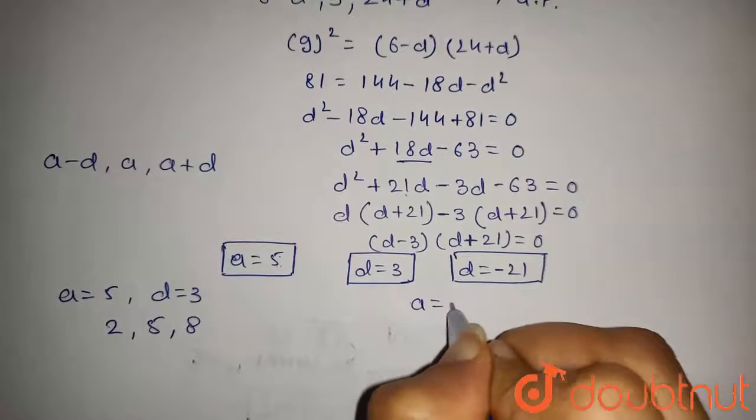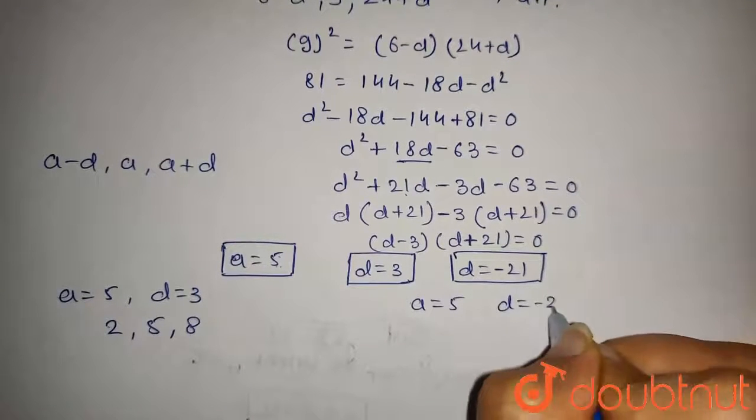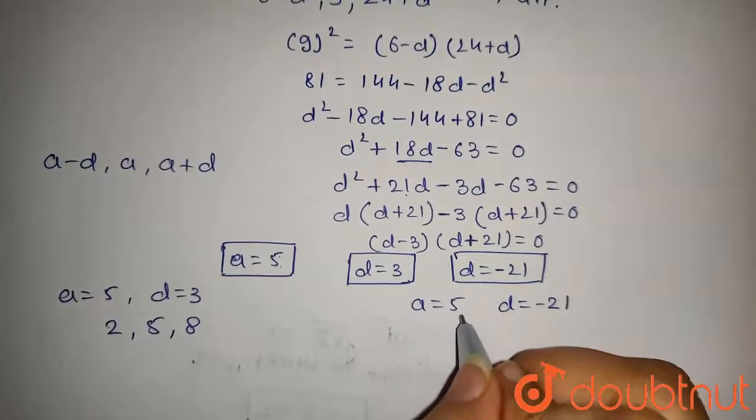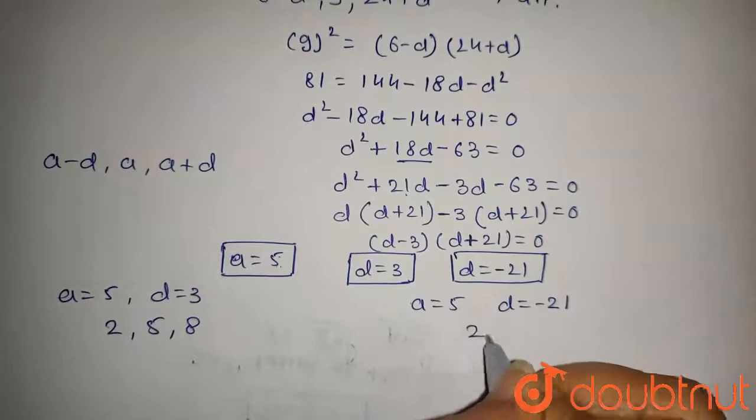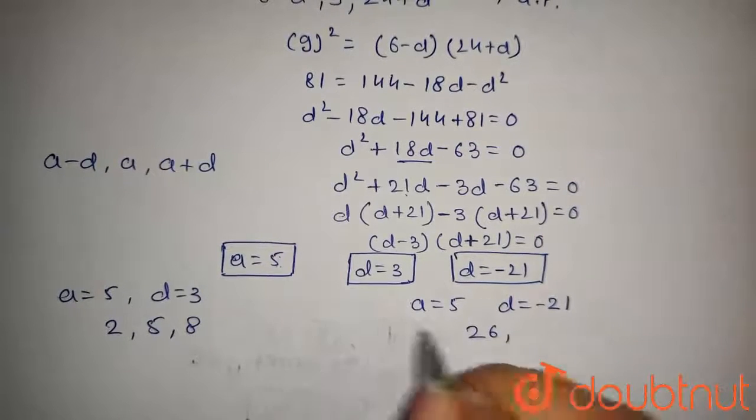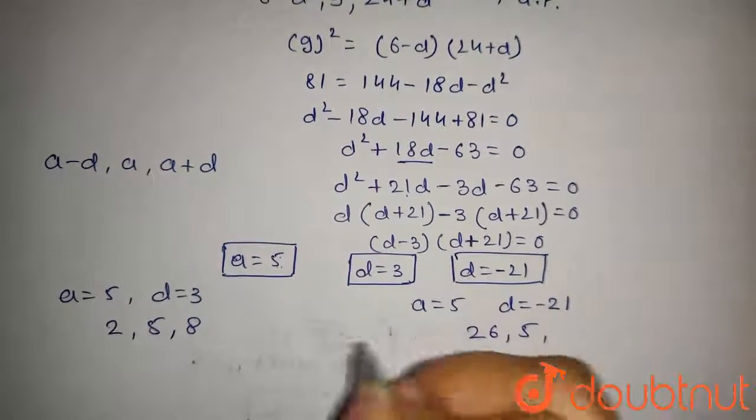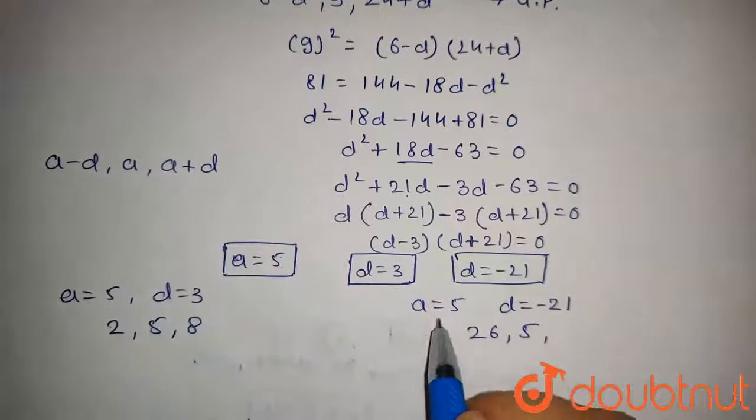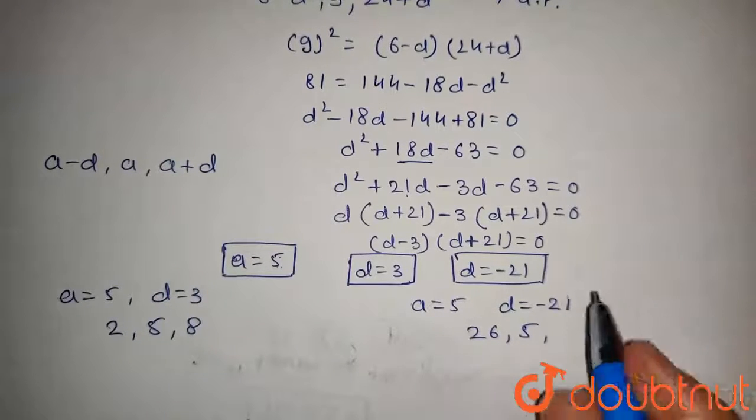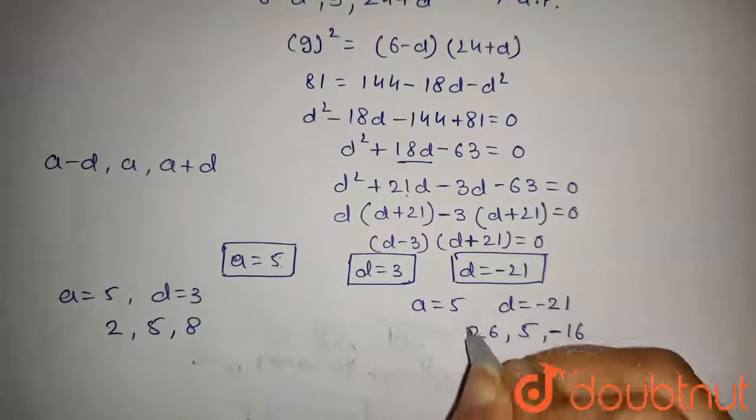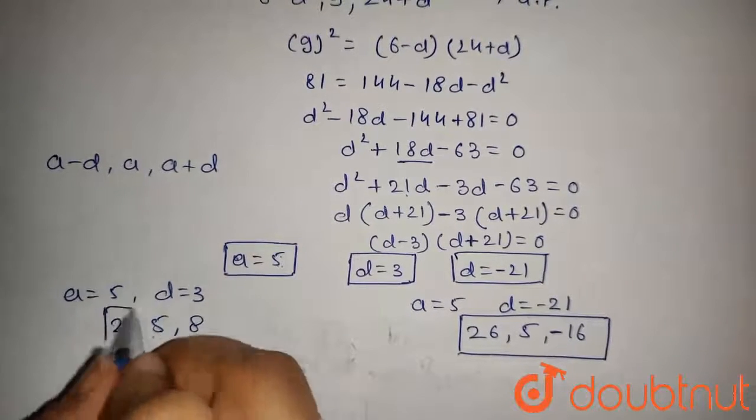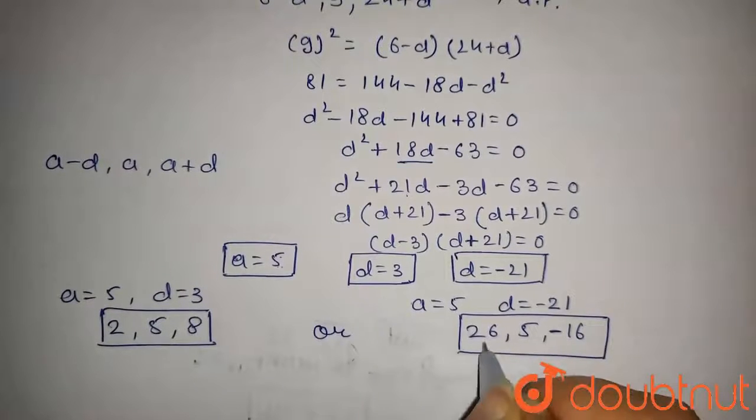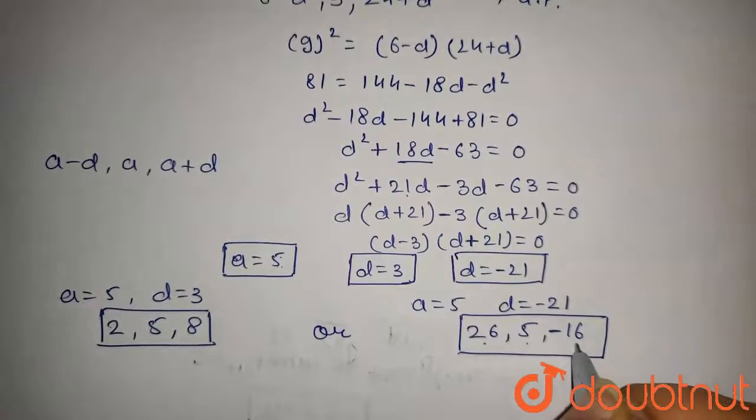If we put A equals 5 and D equals minus 21, the first will be A minus D, that is 5 minus minus 21, which equals 26, and the second number is A, so it will be 5. The third number is A plus D, so it will be 5 minus 21, that is minus 16. So the numbers of the AP are 2, 5, 8 or 26, 5, minus 16.